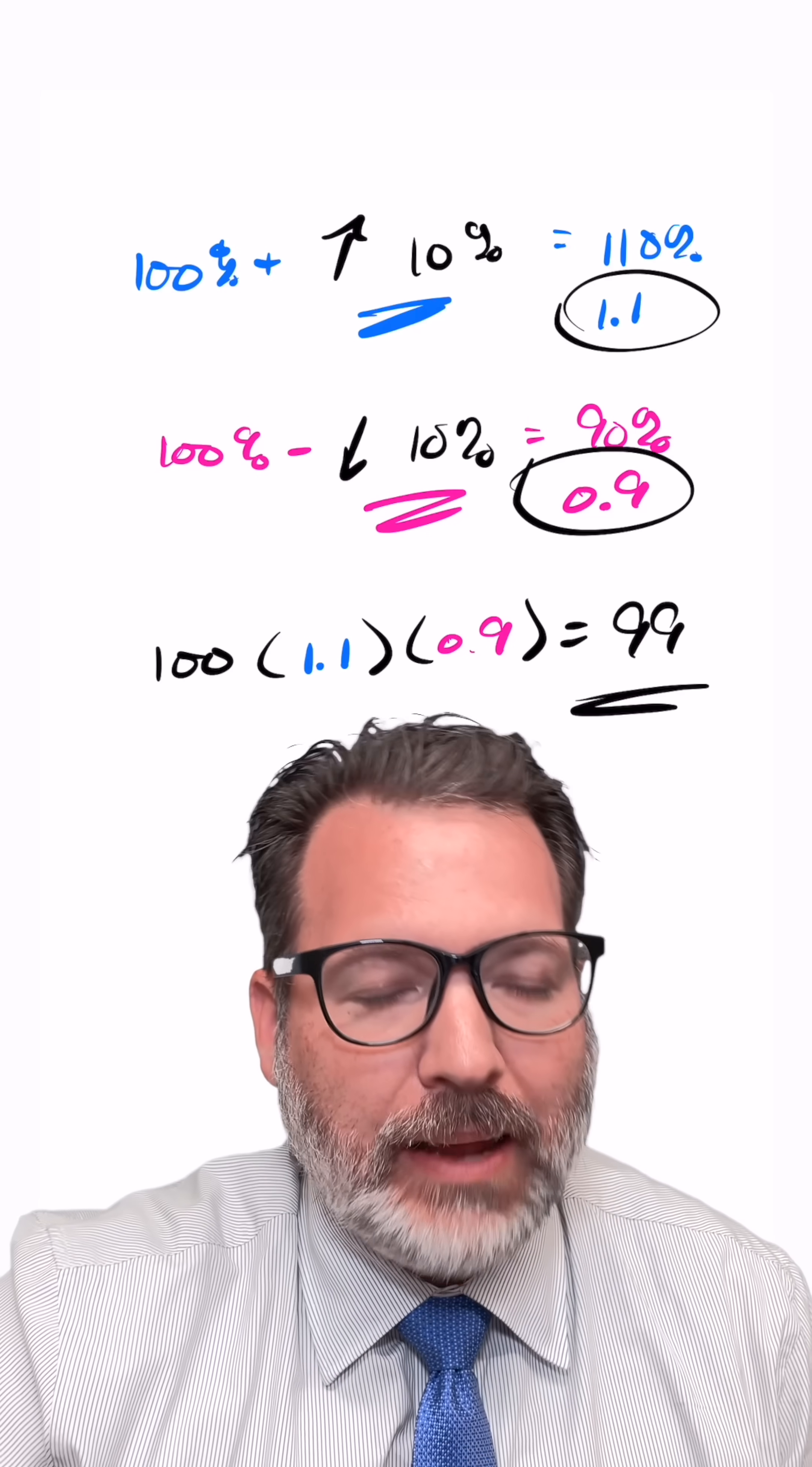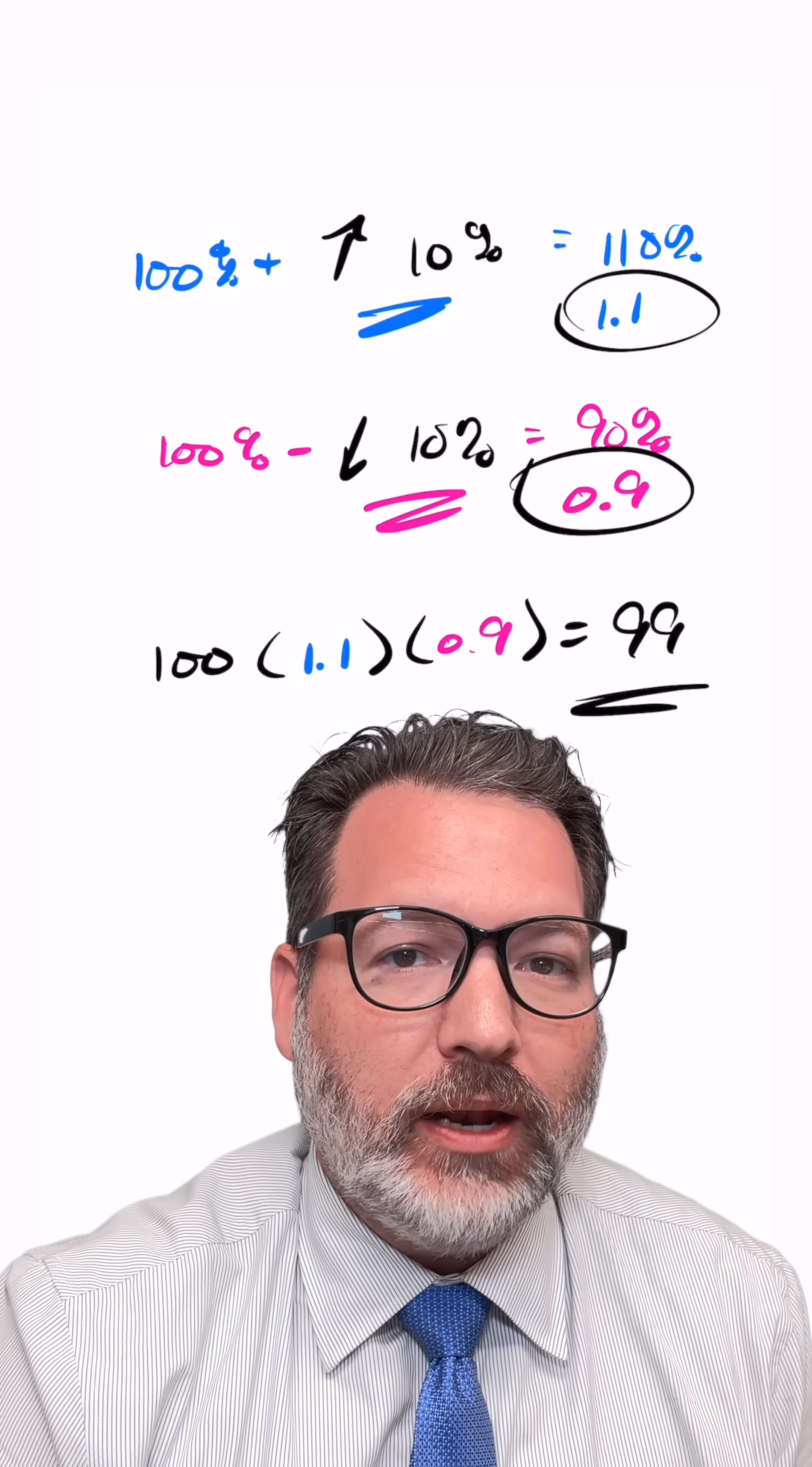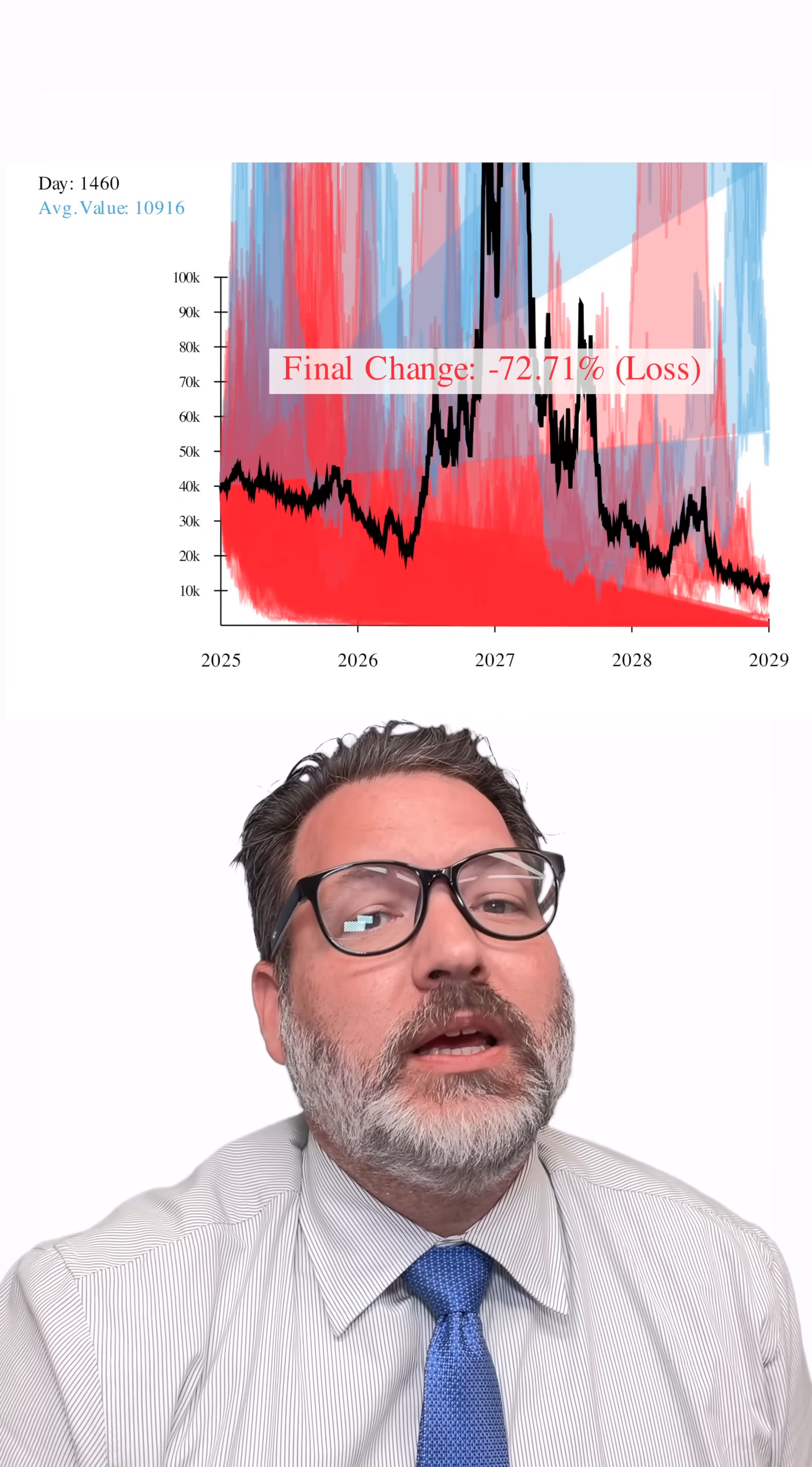Every time the president hits that button and raises the market 10%, then lowers the market 10%, over and over and over again, that 99% turns into 98%, turns into 96%, turns into eventually a really, really big loss.